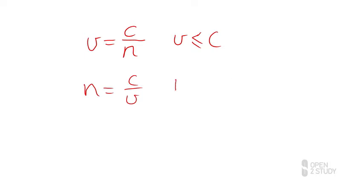We can see here immediately that possible values for N are always going to be larger than or equal to 1. In fact, the refractive index N for vacuum is 1. The refractive index for air is pretty much the same, almost exactly 1.